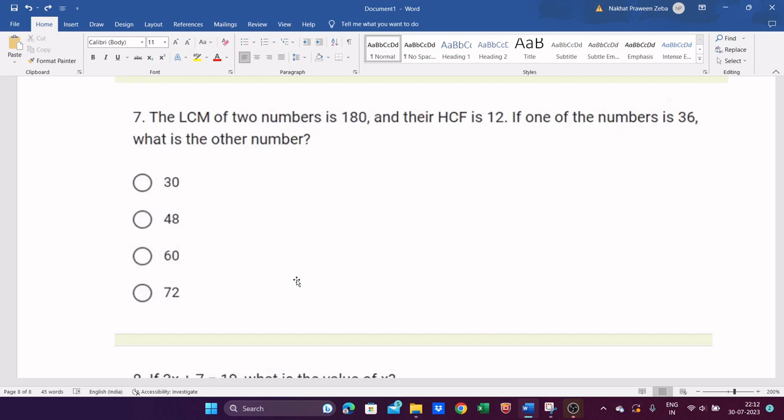So LCM is already given 180, HCF is given 12, so you can directly calculate 180 times 12 equals product of two numbers. Product of two numbers in which one number is already given. So let the second number is x, so 180 times 12 equals 36x.